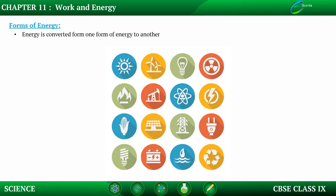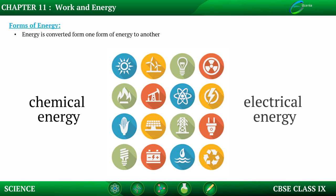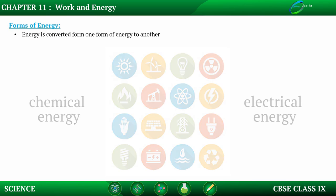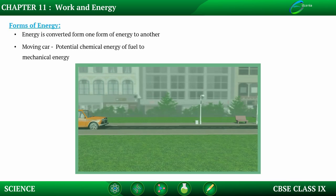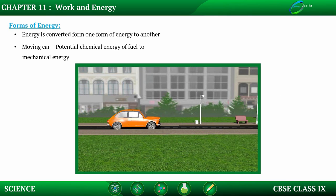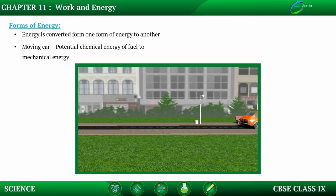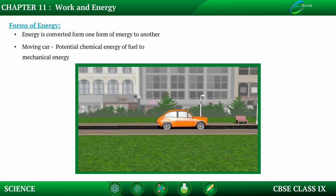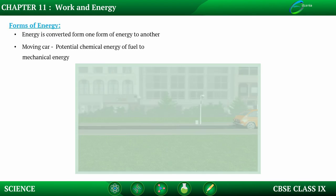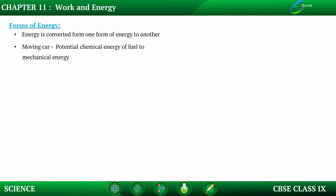We have various ways and means to get energy to get work done. Chemical energy is there, electrical energy is there, and we finally get the work done from it. Energy is changing from one form to another. Like in a moving car, fossil fuel is used — fossil fuel has chemical energy, and it is converted into mechanical energy. The car is moving because of that energy. So the input form of energy is chemical energy, but the output is mechanical energy.